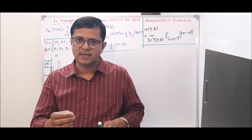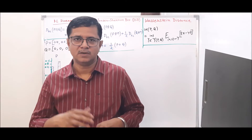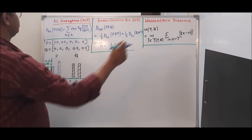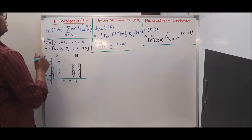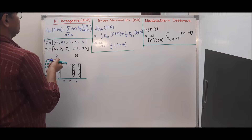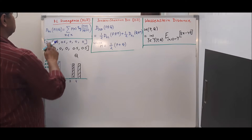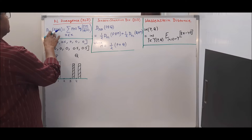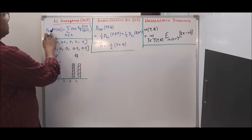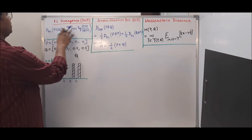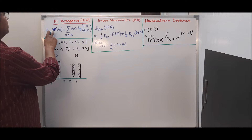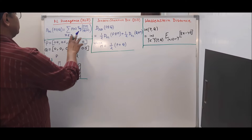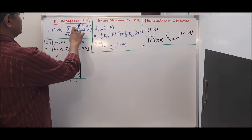Now we will try to understand all things through some examples. Let us start with KL Divergence. KL Divergence is an asymmetric divergence, meaning KL Divergence of P and Q will not be equal to KL Divergence of Q and P. We have a formula to represent KL Divergence for probability distributions P and Q, where X is a member of the entire event set X.